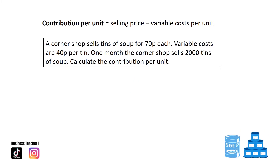Another contribution question. A corner shop sells tins of soup for 70p each. Variable costs are 40p per tin. One month the corner shop sells 2,000 tins of soup. Calculate the contribution per unit. Contribution per tin is 70p minus 40p, which gives a contribution of 30p.